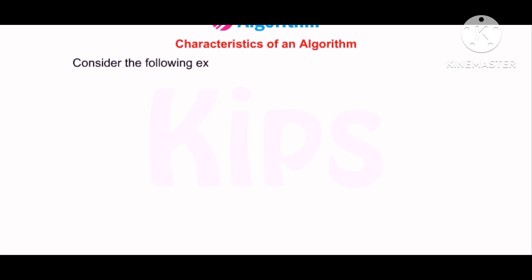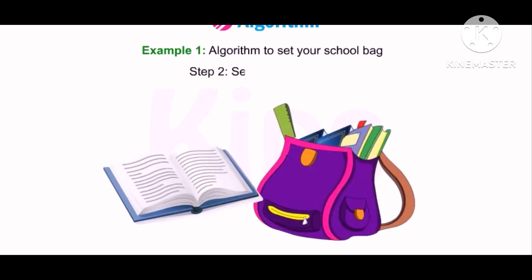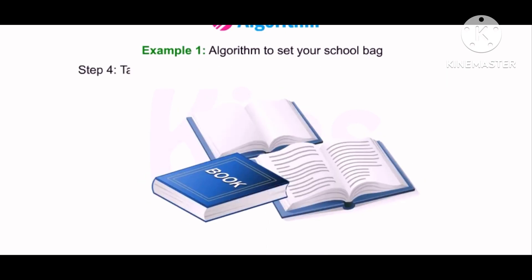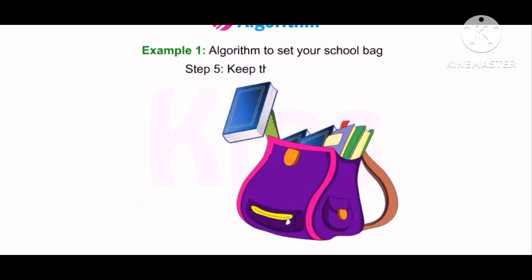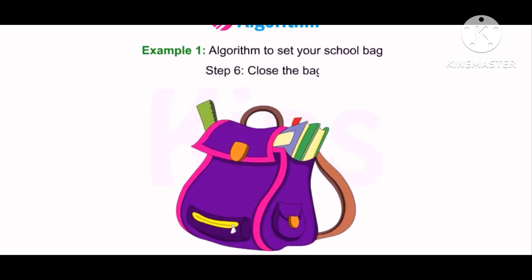Consider the following examples to understand how to write algorithm. Example 1: Algorithm to set your school bag. Step 1. Start. Step 2. See the timetable. Step 3. Go to your bookshelf. Step 4. Take out the books and notebooks according to the next day's schedule. Step 5. Keep them in the bag. Step 6. Close the bag. Step 7. Stop.